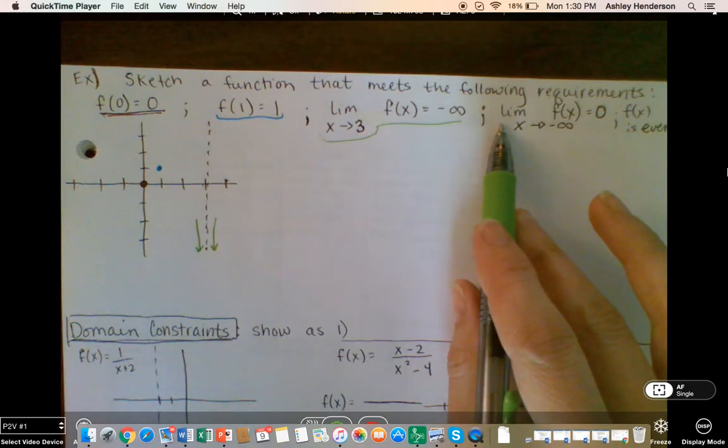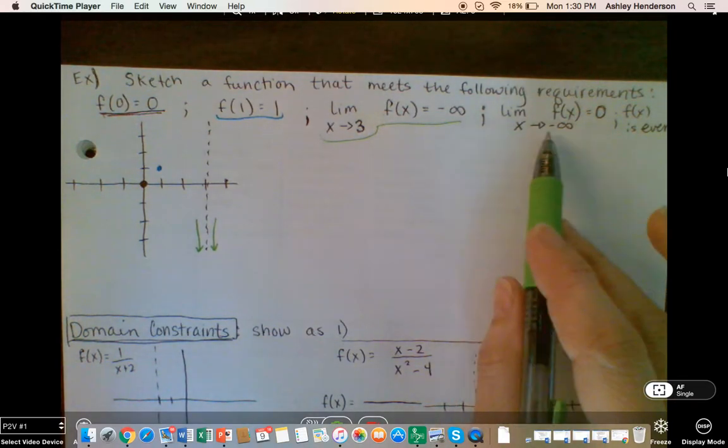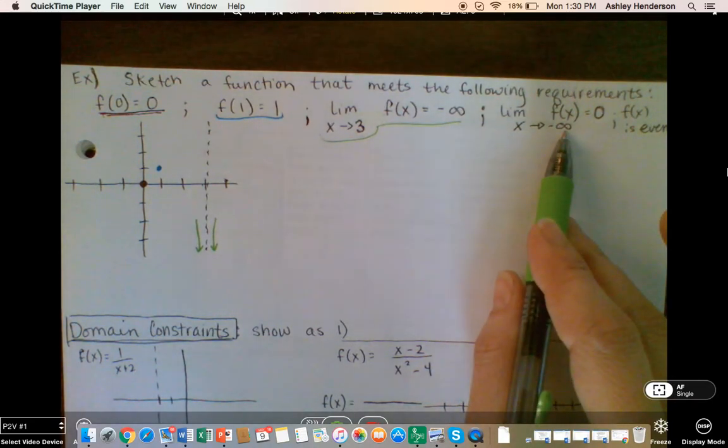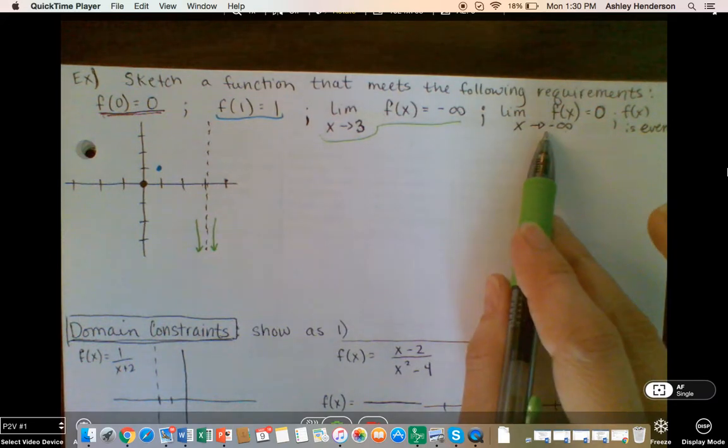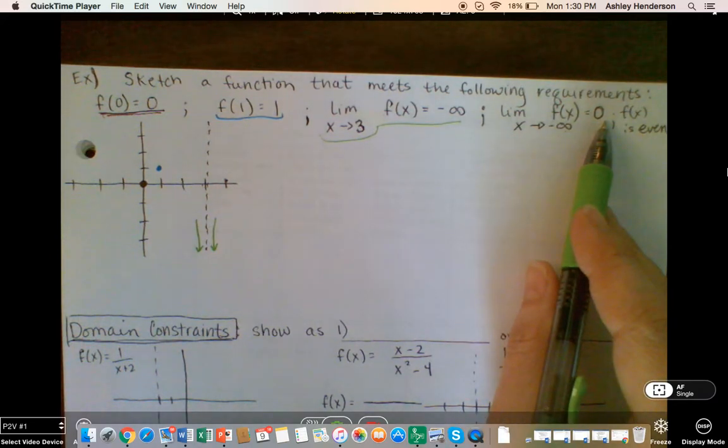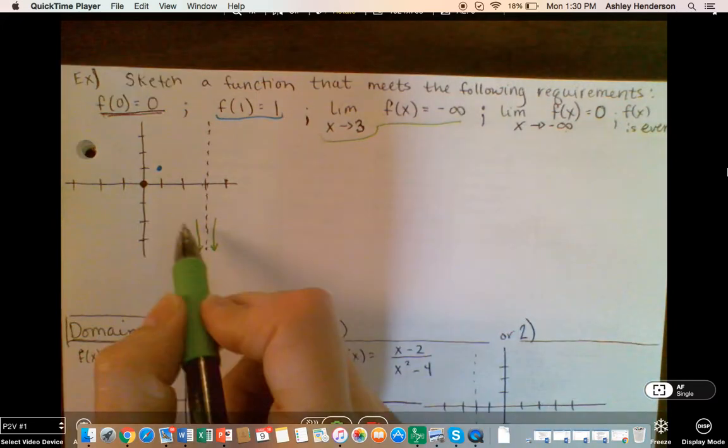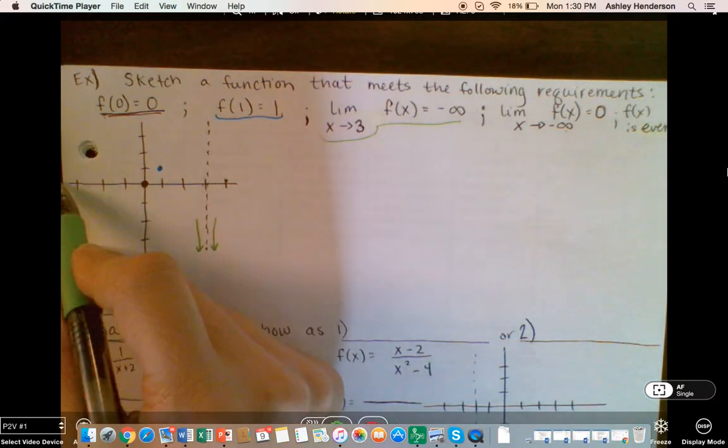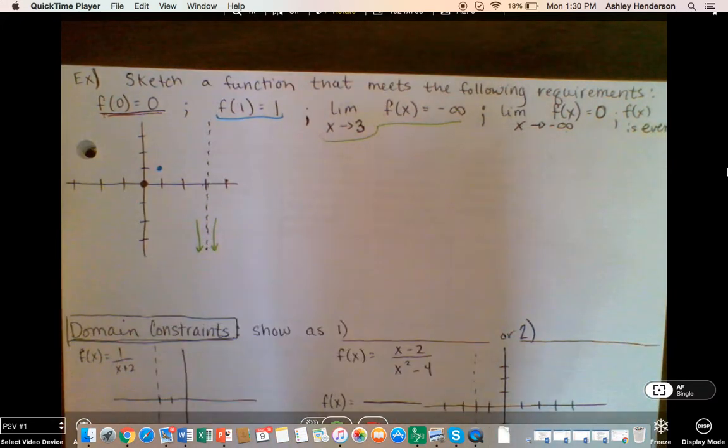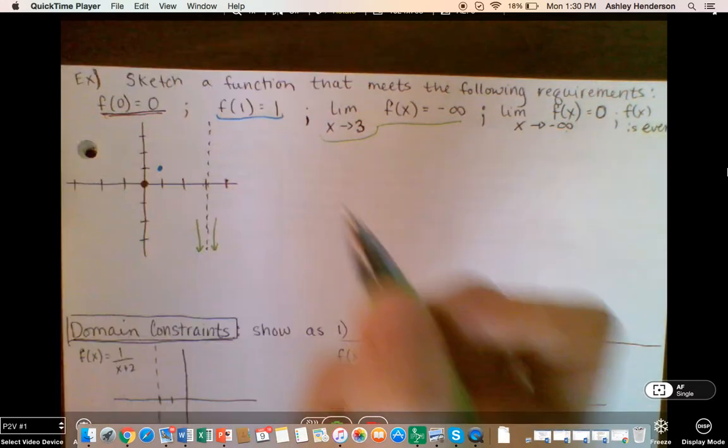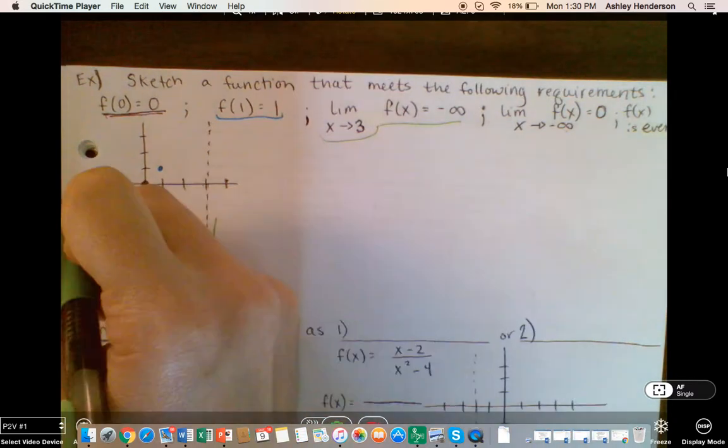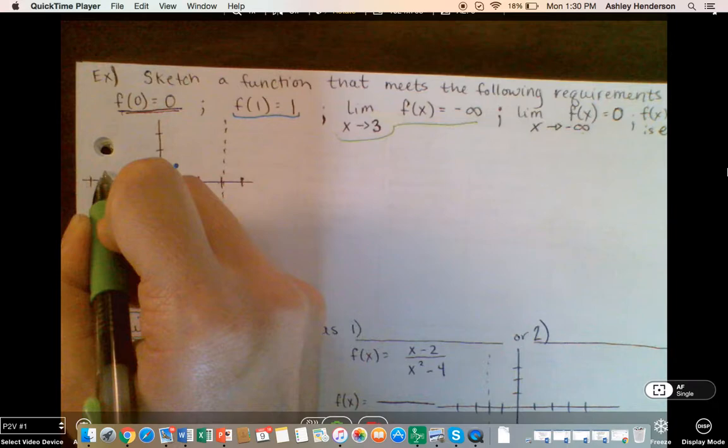The limit as x approaches negative infinity, 0. So as we go more and more and more to the left, the output is going to be close to 0. So somewhere over here, it's going to be coming at 0. I don't know if it's coming at 0 from below or above, but let's come back to that one.